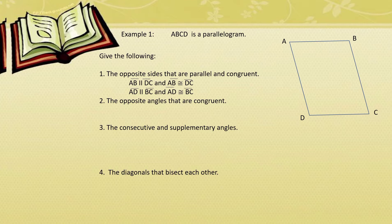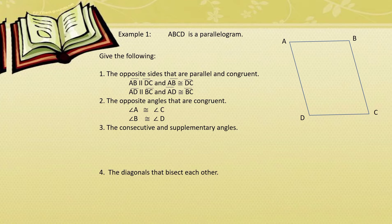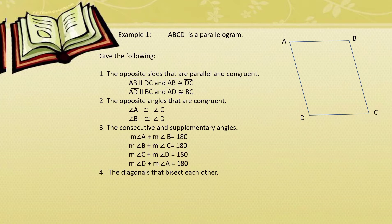Number two: give the opposite angles that are congruent. We have angle A is congruent to angle C, and angle B is congruent to angle D. Question number three: give the consecutive and supplementary angles. When we say consecutive, that means they follow in order. And supplementary means if we add the two consecutive angles, their sum is 180 degrees. So we have: measure of angle A plus measure of angle B equals 180; the same with angle B and C; angle C plus angle D; and angle D plus angle A — their sum is 180 degrees.